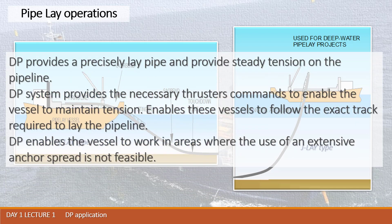DP provides precise pipe lay and provides steady tension on the pipeline to avoid damage to the pipe. The DP system provides the necessary thruster commands to enable the vessel to maintain tension and enables the vessel to follow the exact track required to lay the pipeline. DP also enables the vessel to work in areas where the use of anchors is not feasible, for example in deep water locations where operations with anchors are impossible.